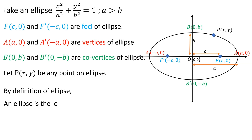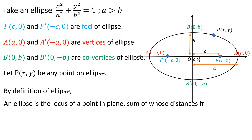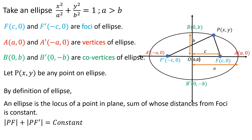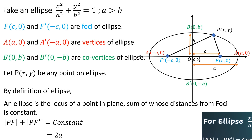Now let's take a point P(x, y) on the ellipse. By the definition of the ellipse, an ellipse is the locus of a point in a plane the sum of whose distances from the foci is constant. That is, PF + PF' is equal to a constant, and this constant is equal to 2a. If you want to know why this constant equals 2a, you can watch our video.